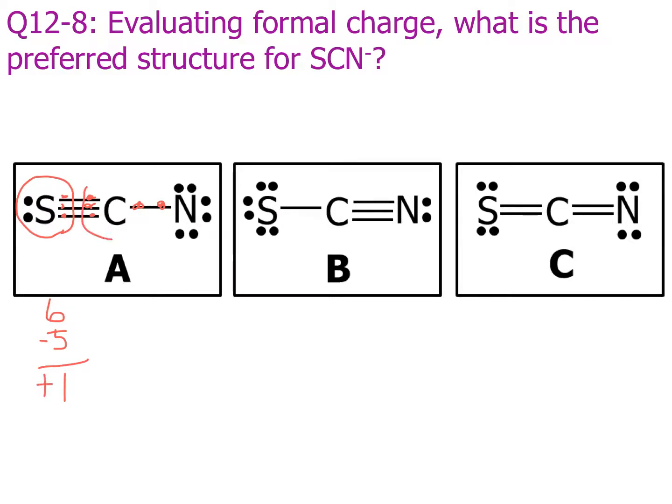For the carbon, carbon is group four. There are four in the circle, so carbon's formal charge is zero. And for nitrogen, nitrogen's in group five. There are seven electrons in the circle, so the formal charge is minus two. Okay, let's try that for the rest of them.